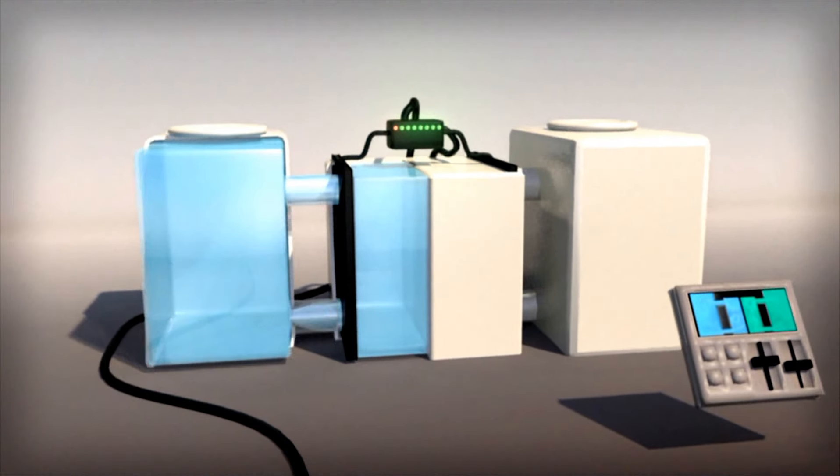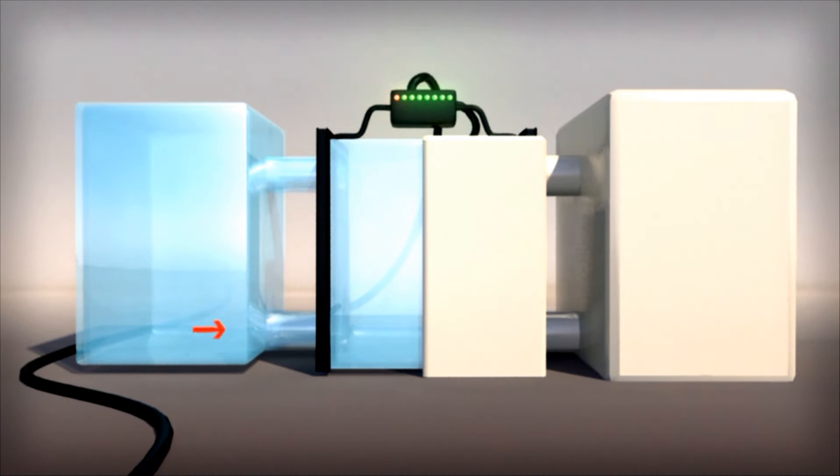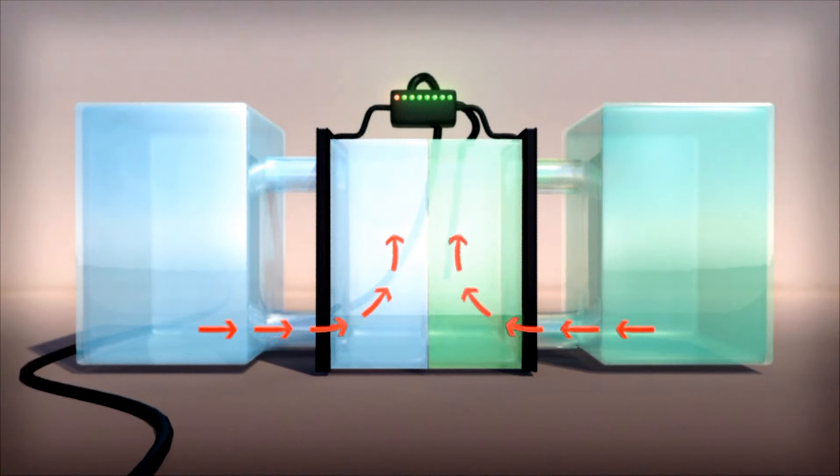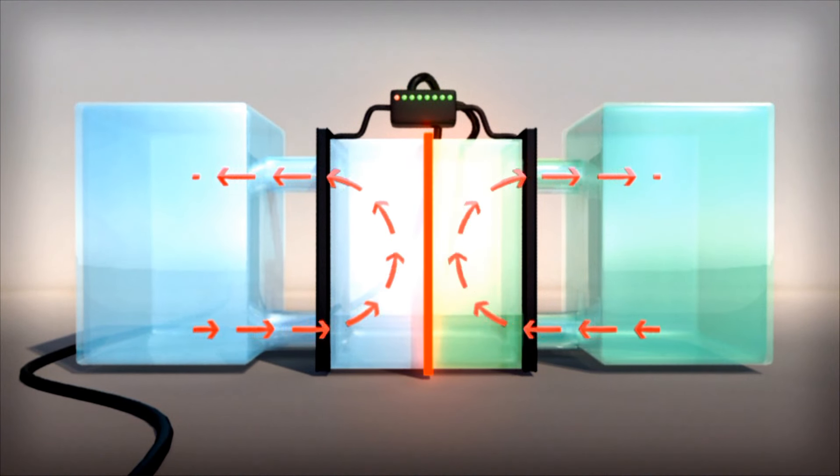A positive electrolyte solution is pumped from a tank on one side of the battery through the cell stack, while a negative electrolyte solution is pumped from a tank on the other side of the battery. A thin membrane in the cell stack keeps the two solutions from mixing together.